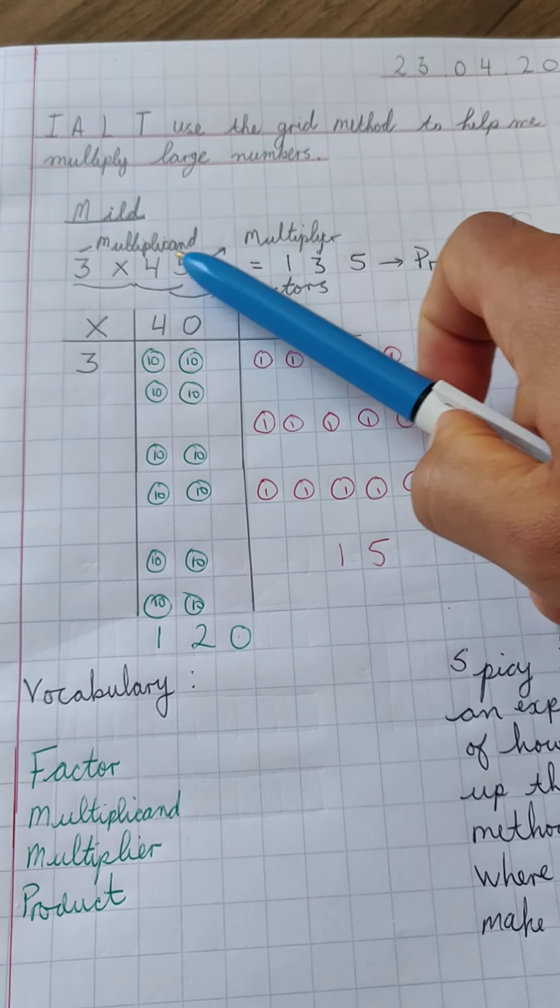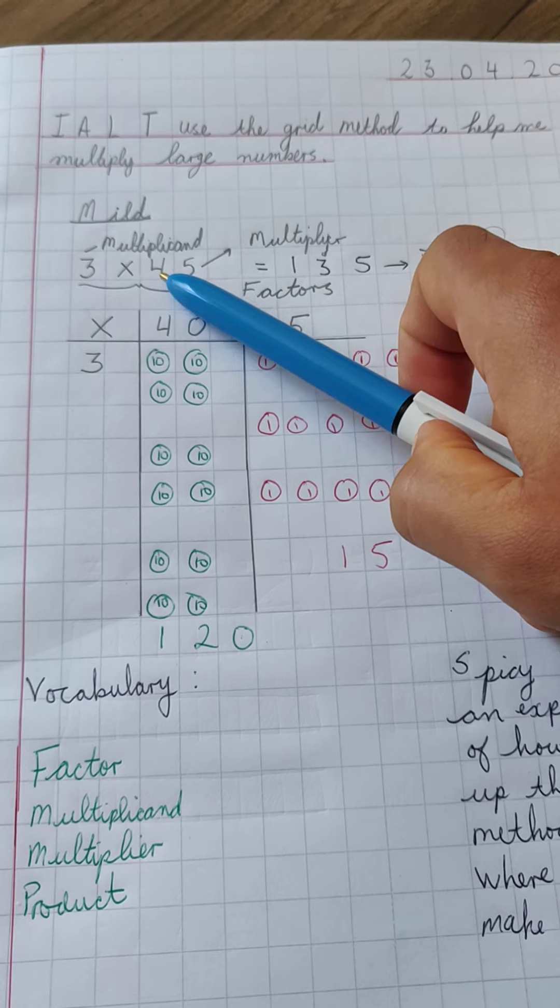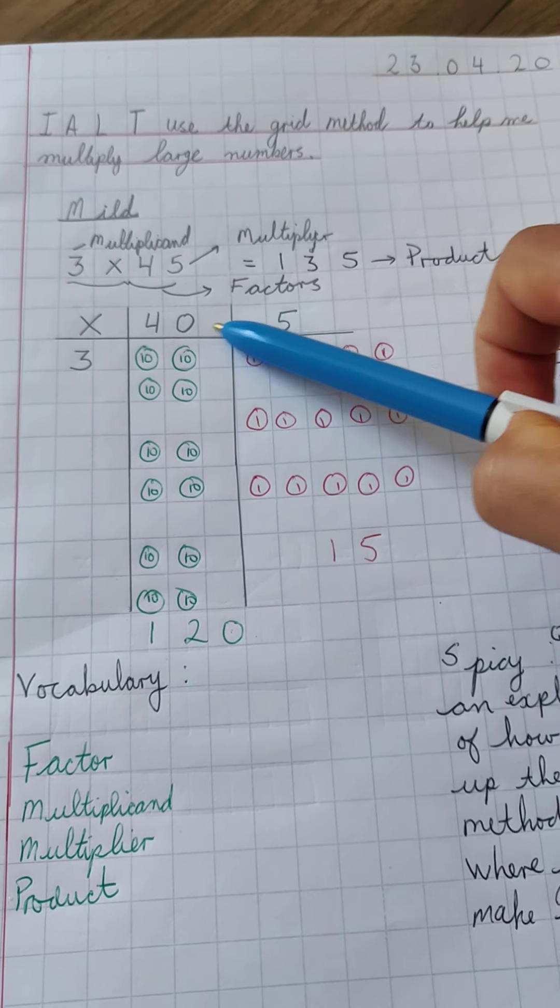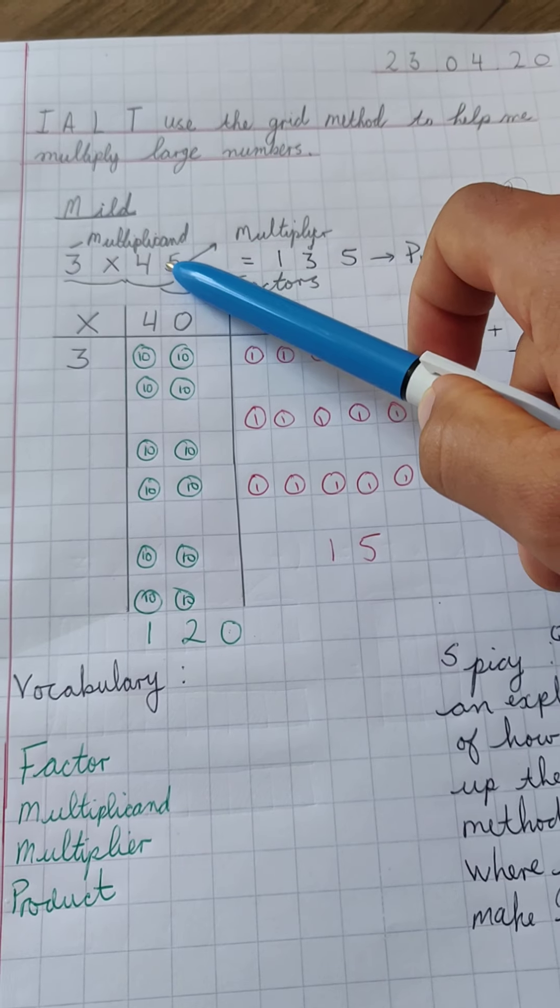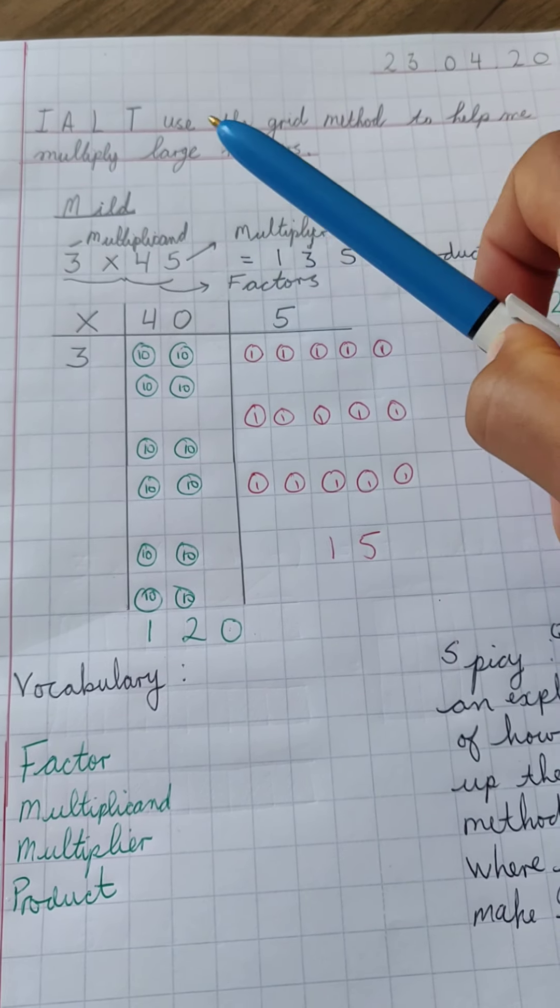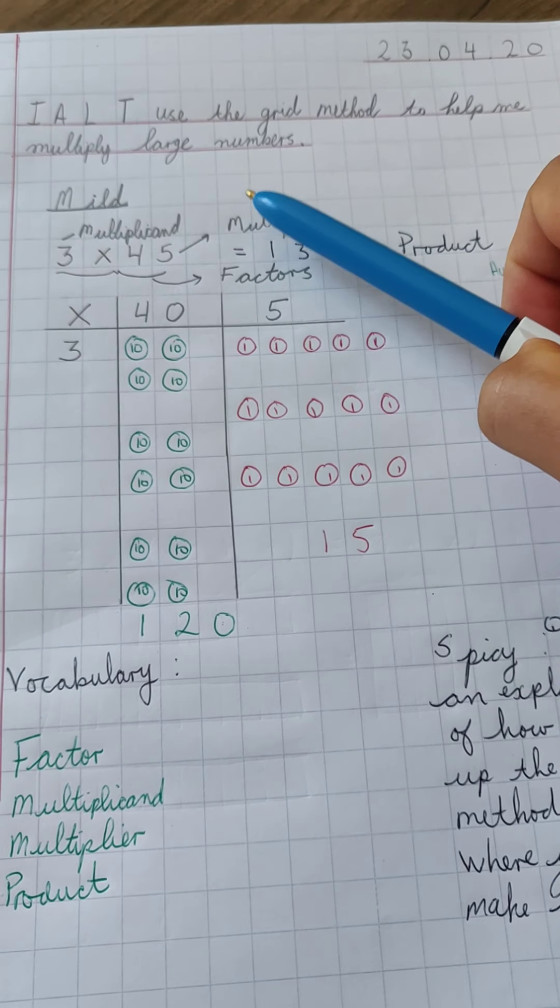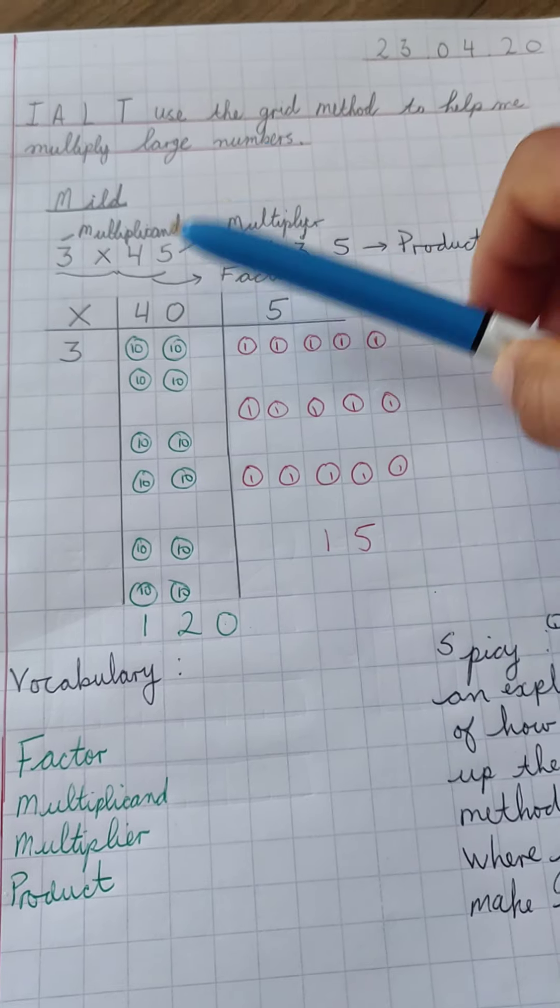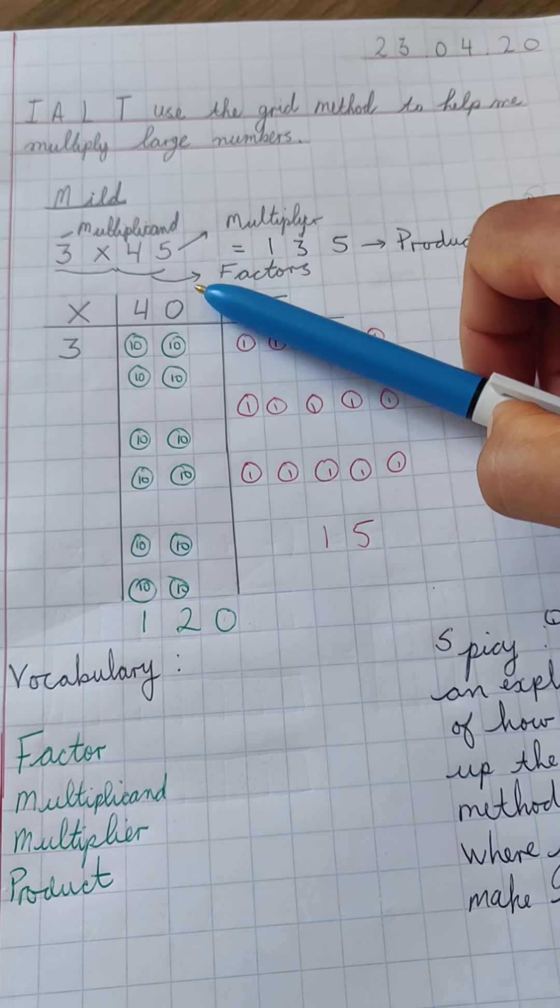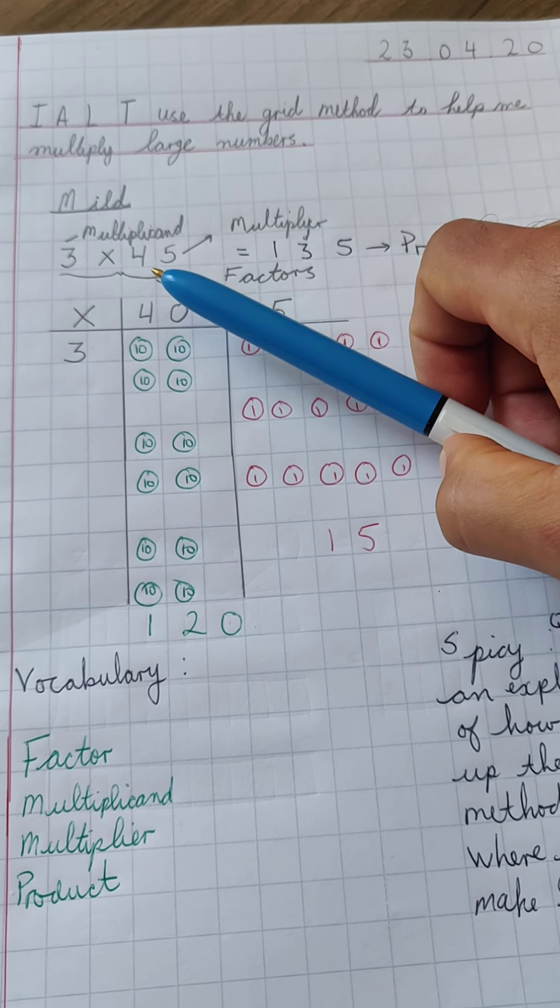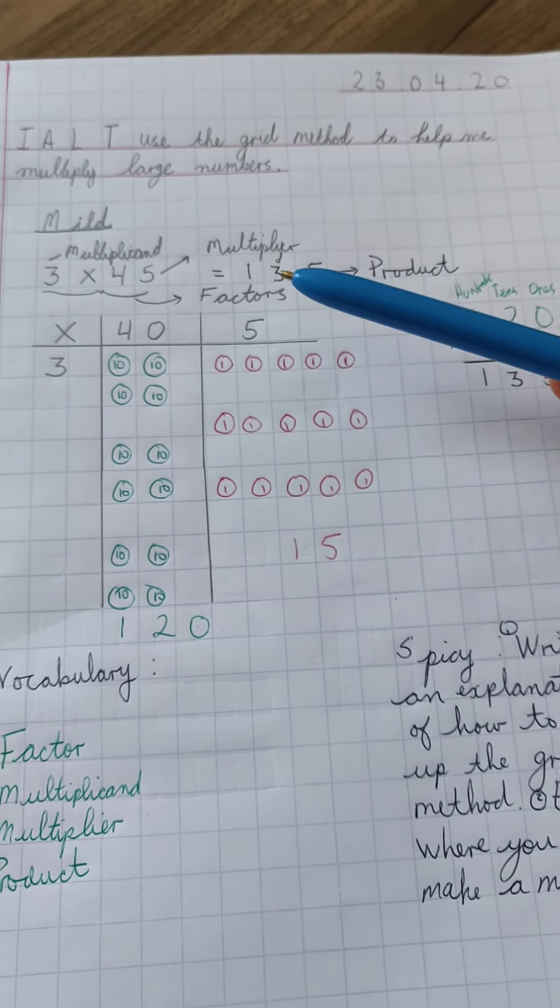And I want you to challenge yourself. So if you feel that you want to do two digit multiplier, please do. Just like I've done here in my example. But if you want to challenge yourself and you want to go perhaps with a three digit multiplier, please do so. Again, you can roll a die and you can see perhaps what you get for your ones, for your tens and for your hundreds. Just to make it a little bit more fun for yourself.